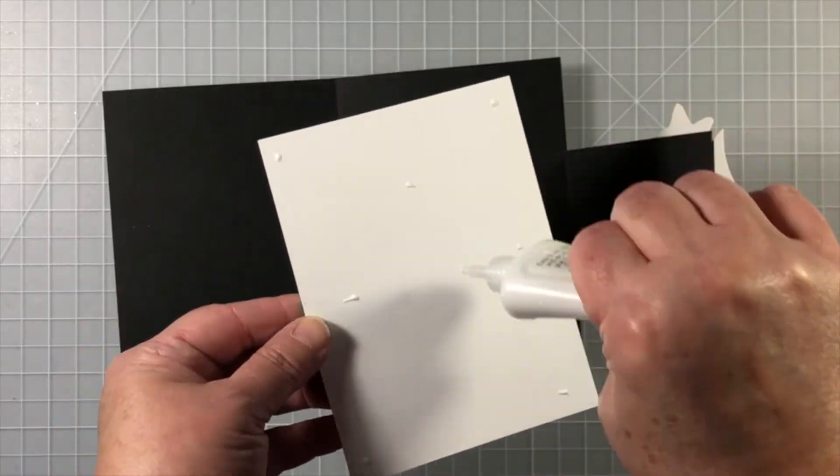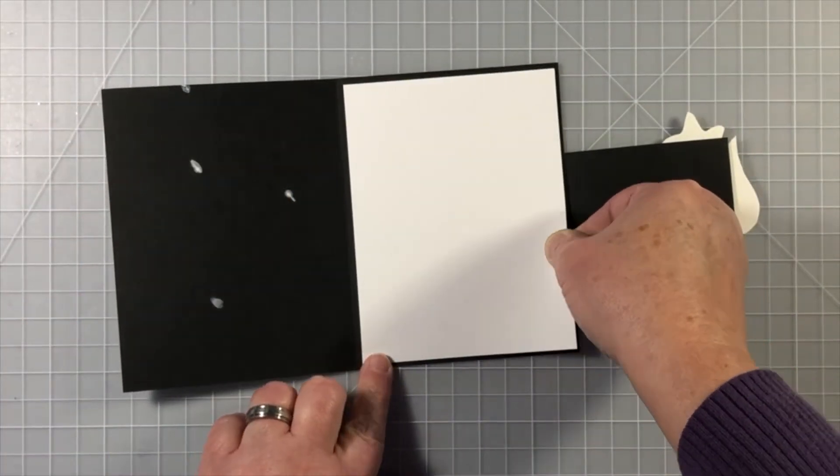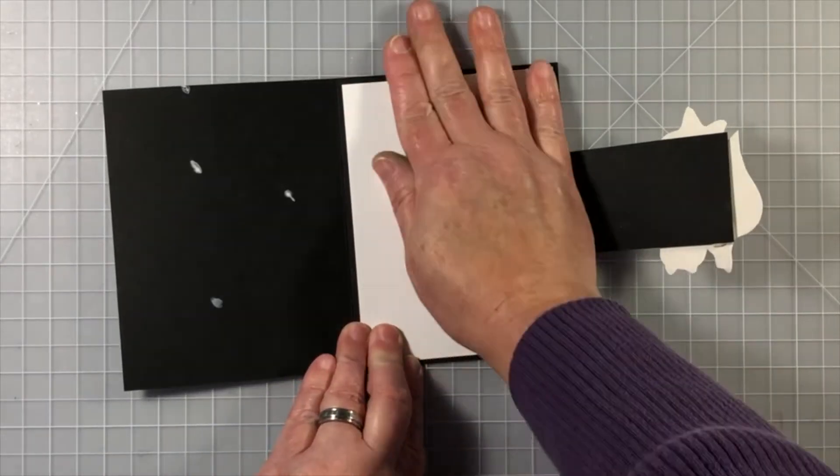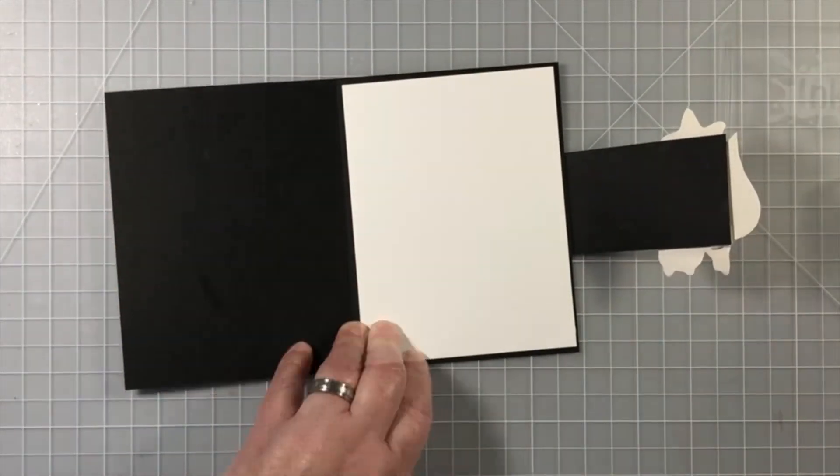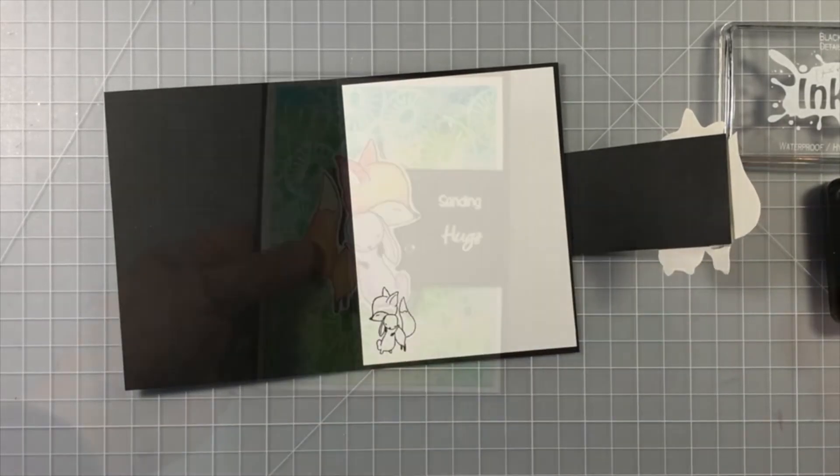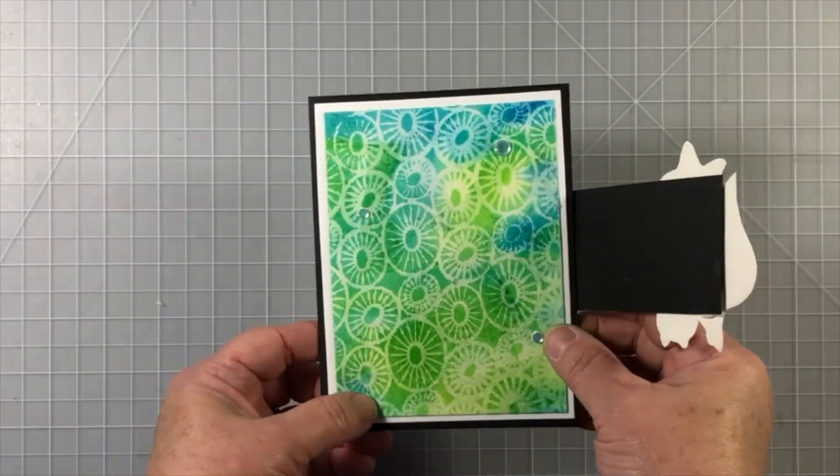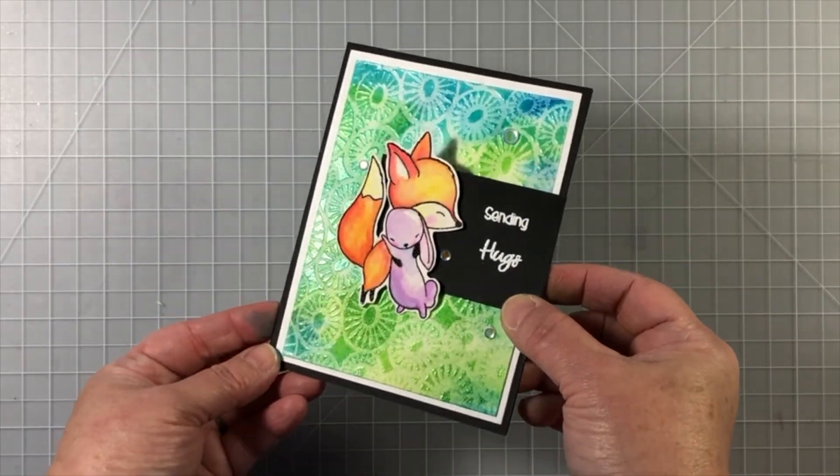Because I have an exposed flap on the inside of the card where I adhered that little hug portion wrap around, I'm going ahead and adding in a white panel to cover that up. Then I couldn't resist using that little image. There's two sizes and it's just perfect.